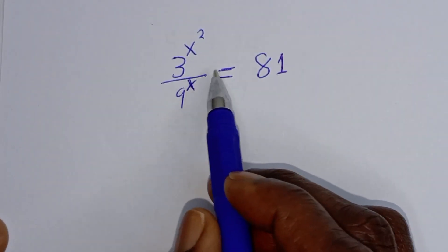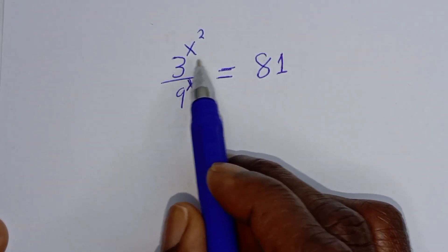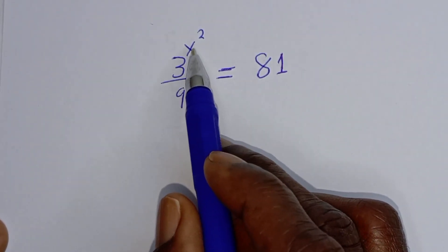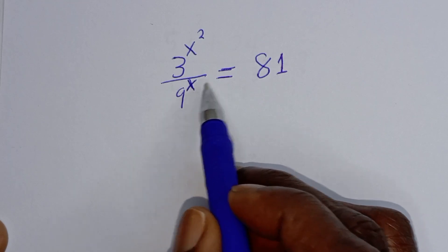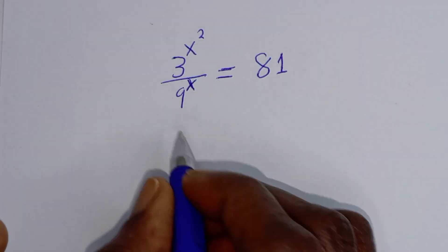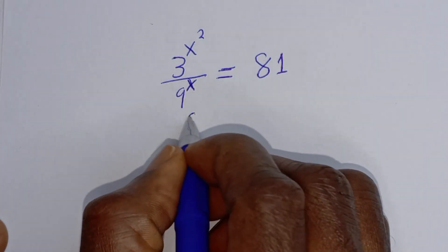Hello. How to solve for x from this given problem: 3 raised to power x squared divided by 9 raised to power x is equal to 81.